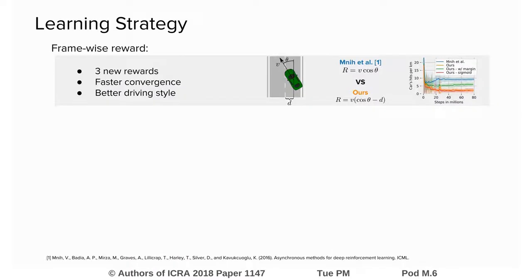The following are our contributions to improve the learning process. We propose three new rewards, benchmarked in the paper. All take into account speed, angle and distance from the track center, leading to faster convergence and a better driving style. The best of all displayed in orange reduces collisions per kilometer to one-fourth compared to the baseline reward, shown in blue.